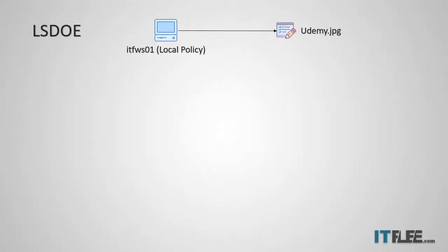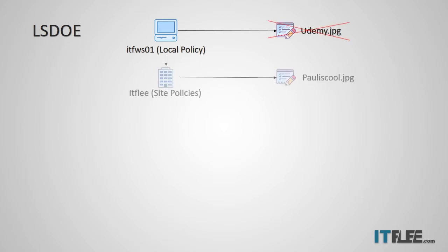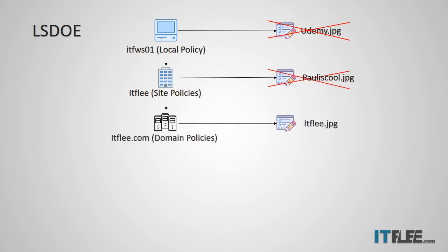Well, to know this we're going to have to remember LSDOE — local, site, domain, OU, and enforced. In this first diagram we have ITF Workstation 01. It has a local policy configured to use the background Udemy.jpg. In this scenario, local is going to win because nothing else is configured. But if another administrator adds a site policy that configures Pauliscool.jpg, since site is second in the order of precedence, Pauliscool.jpg will take effect over Udemy.jpg. Then if someone assigns a domain policy configured with ITFly.jpg, that GPO will overwrite Udemy.jpg and Pauliscool.jpg and take precedence.